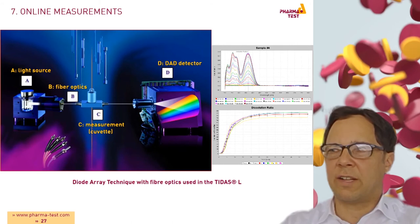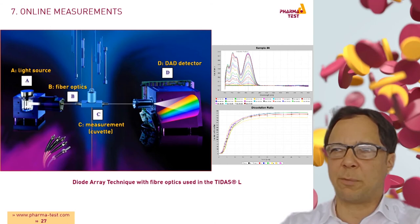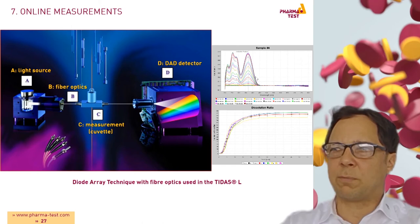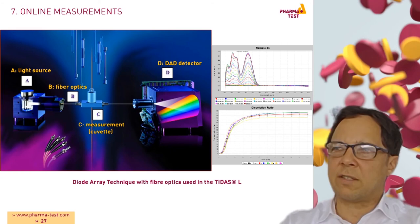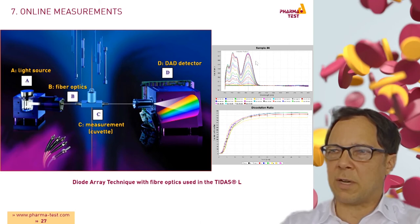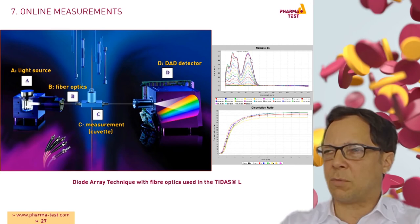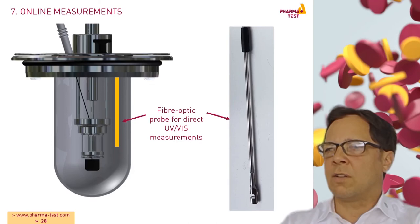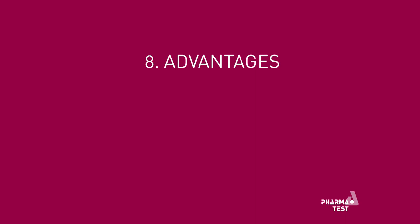We use the TDAS-L diode array spectrometer for online measurements with a dispersion releaser. On the left side we see the light source which is a tungsten and deuterium lamp, fiber optic cables, the measurement cell which could be a cuvette, and the diode array detector. On the right side we see a spectrum which was measured in less than 20 milliseconds, from 200 to 800 nm, with the absorbance maximum at about 240 nm. When we cut at 240 nm we get a typical dissolution profile. The measurement can also take place directly in the dissolution vessel using a fibre optic probe.